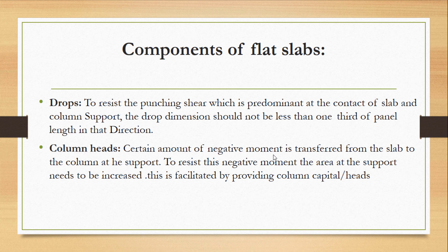A certain amount of negative moment is transferred from the slab to the column capital at the support. To resist the negative moment, the area at the support needs to be increased. This is the function of the column capital — it provides the component of the capital and automatically increases the area, allowing the negative moment capacity to be increased.